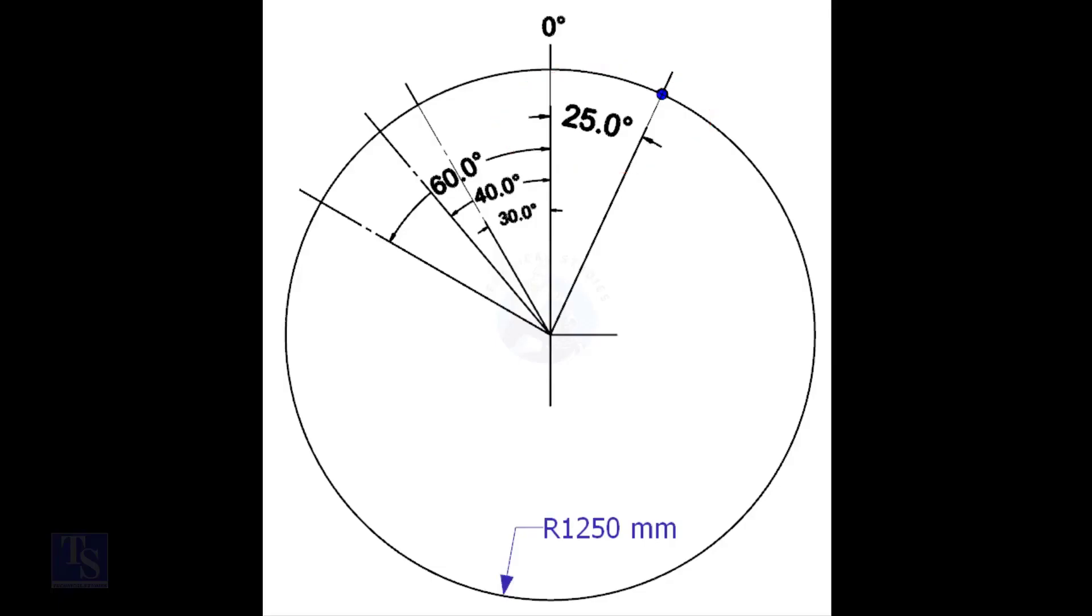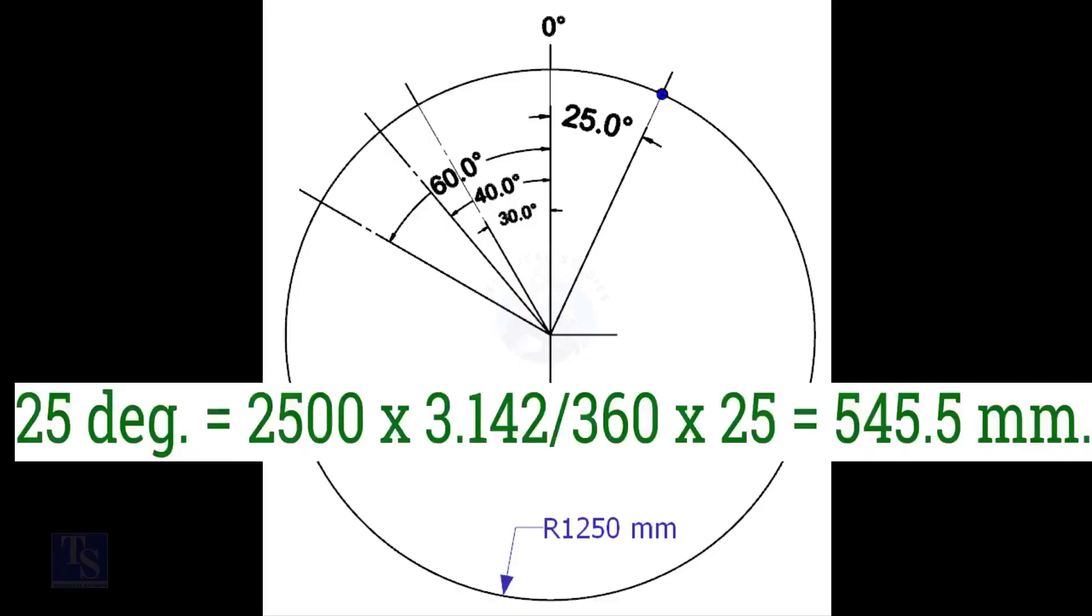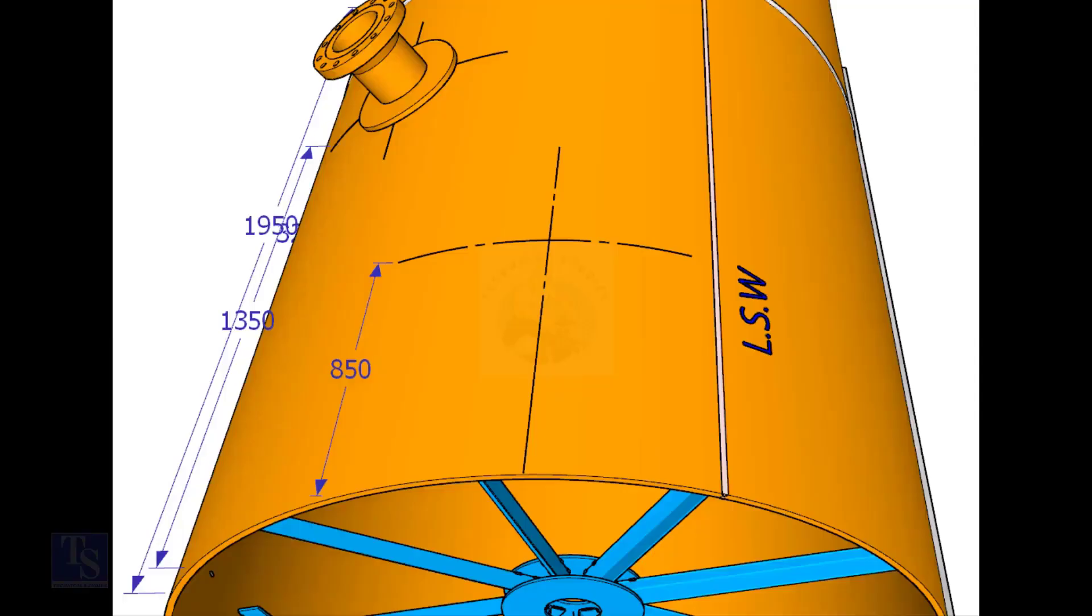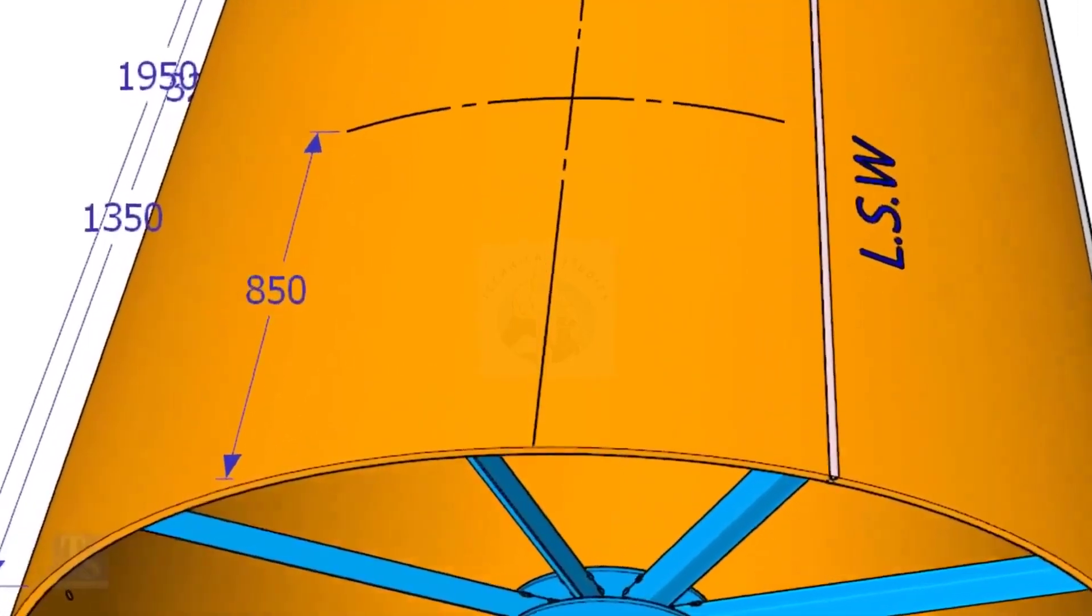We have the angle in degrees and the diameter of the tank. Let us calculate the arc length. Arc length for 25 degree equals outer diameter times 3.142 divided by 360 times 25, which equals 545.5 millimeters. Mark this distance on the end of the shell.